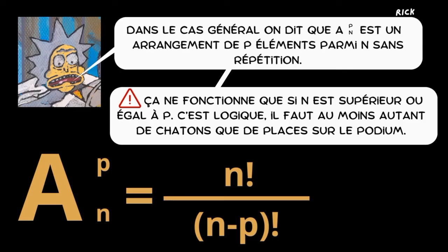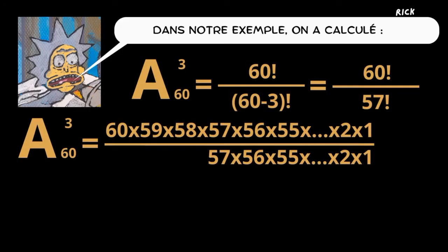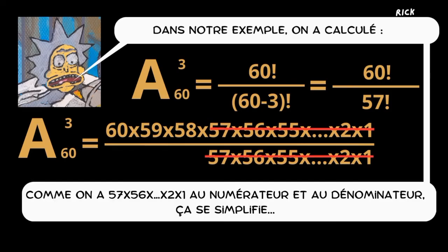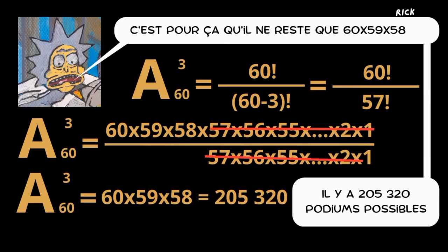It's common sense — you need at least as many kittens as there are places on the podium. In our example, we calculated 60 factorial divided by (60 minus 3) factorial, which is equal to 60 times 59 times 58 — because the 57 times 56 and so on down to 1 in the numerator and denominator cancel out. This is why only 60 times 59 times 58 is left, giving 205,320 possible podiums.